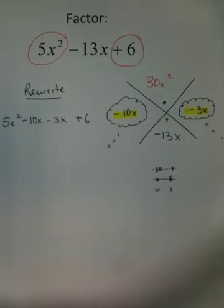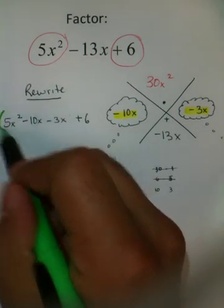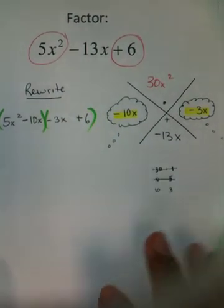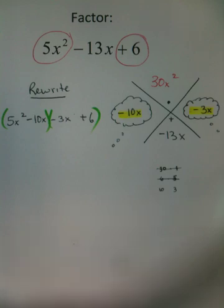From this point, you can start factoring by grouping, which I call the bam-bam method because you're adding these parentheses, and as you do so, they bam, make the magic and make this problem super easy.